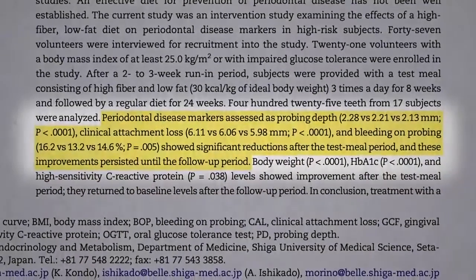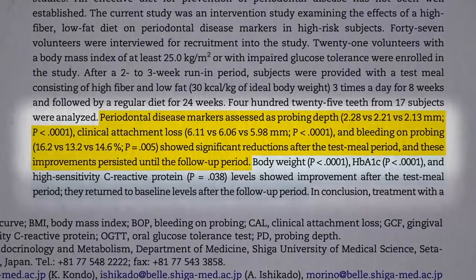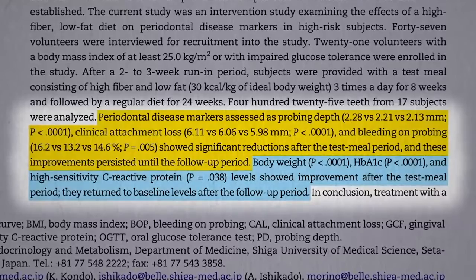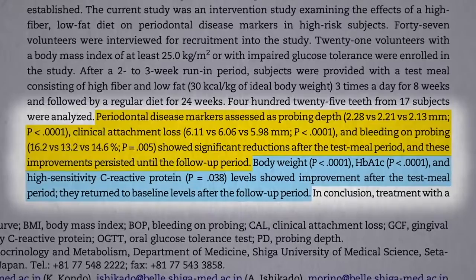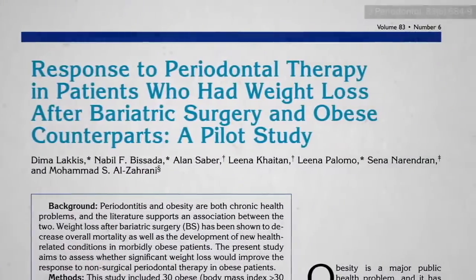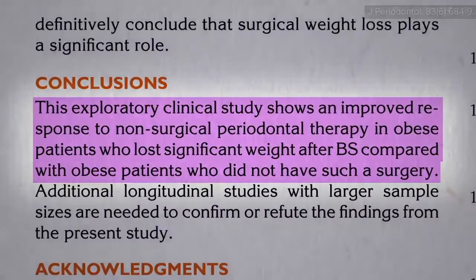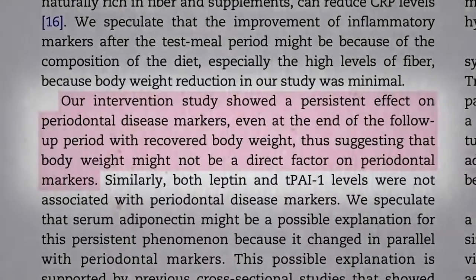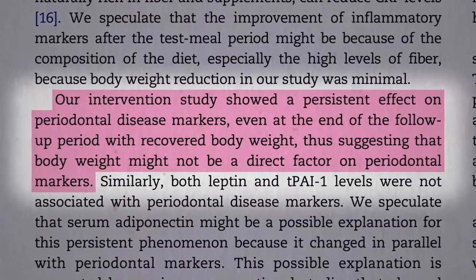Eating a healthier diet also improved body weight, blood sugar control, and systemic inflammation. But that complicates things — maybe their mouths got better just because they lost so much weight. You can improve periodontal disease with just bariatric surgery, like stomach stapling. However, after eight weeks on the diet, they went back to their regular diet and gained most of the weight back, but the periodontal disease improvements persisted, suggesting it was more than just the weight loss that led to the improvements.